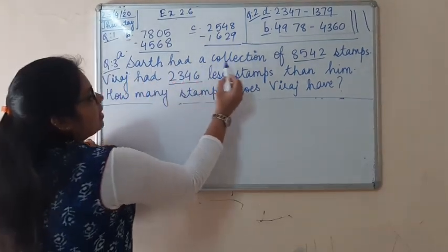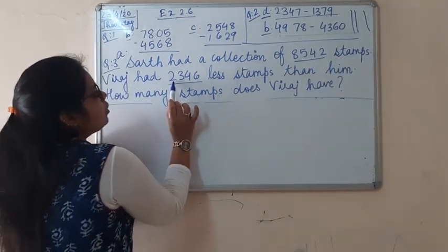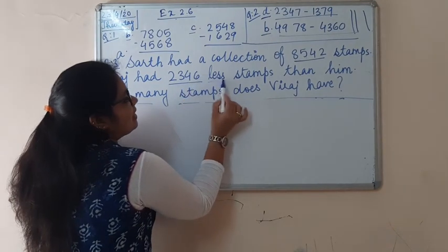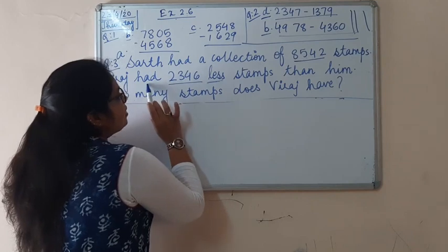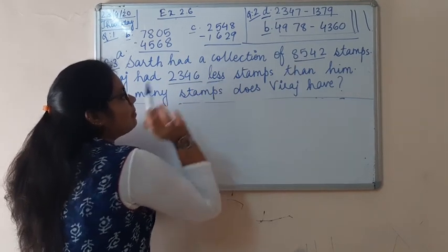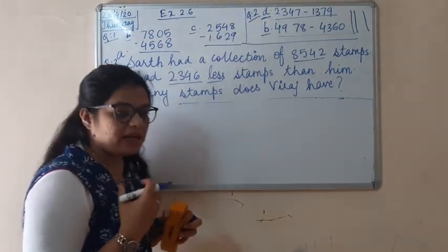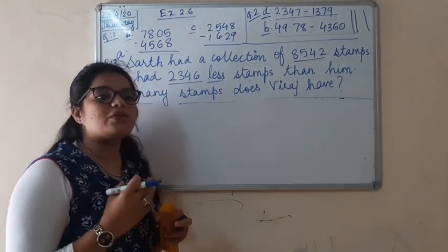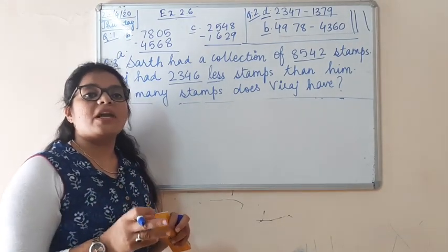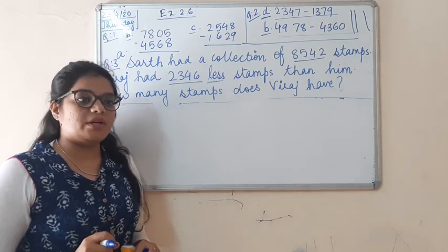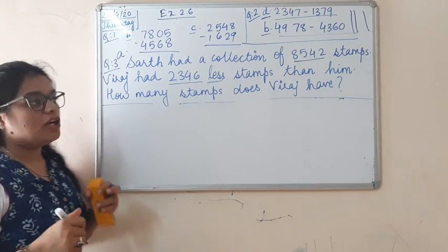Sart had a collection of 8,542 stamps. Viraj had 2,346 less stamps than him. It means Sart has that many, and Viraj has that many fewer. How many stamps does Viraj have? For example, if one student has 5 pencils and another has 3 less, how many does the other student have? We subtract: 5 minus 3 is 2, so the other student has 2 pencils. This is the same type of question.